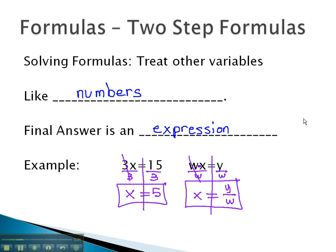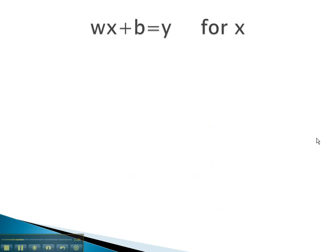Let's try some examples that are more like two-step equations. Here's a problem where we can balance through the equals sign, and our goal is to solve for x. This means we want the x to be alone on the left side of the equation. We'll treat the other variables like numbers.